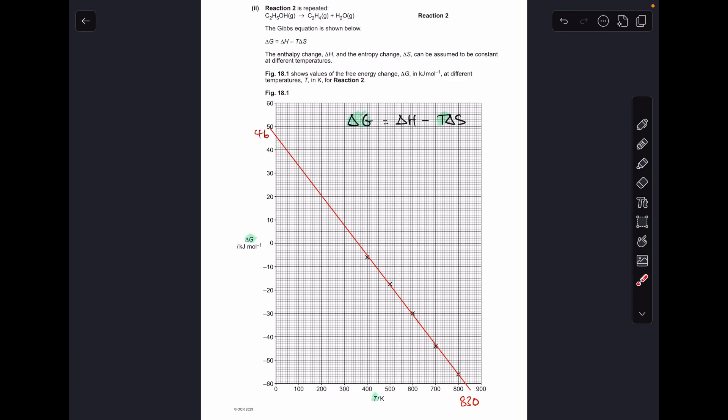So the thing I've got to appreciate with the Gibbs equation, delta G equals delta H minus T delta S, is that it's actually in the form of a straight line equation, Y equals MX plus C. I'll rearrange this just to show you what I mean. But basically we've got delta G on the Y axis and we've got T temperature on the X axis. So all I've done here is written the Gibbs equation again but in a slightly different format so that it mirrors Y equals MX plus C.